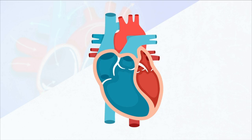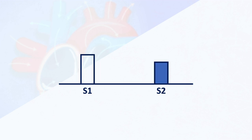Let's listen to a normal heart sound. You can hear the lub-dub, lub-dub, lub-dub — it's like a clean sound for S1 and S2. So we have the first heart sound S1 and the second heart sound S2, and this is what we hear in a normal heartbeat.